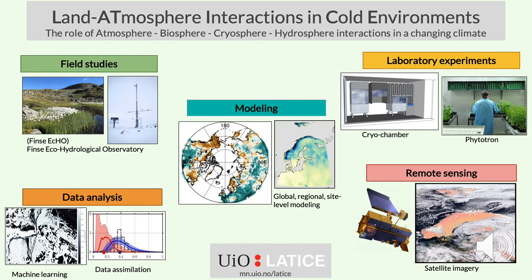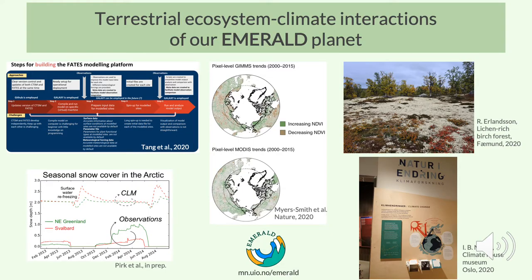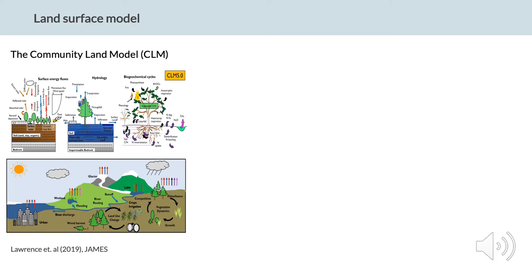There are two projects supporting this study. The first one is Lattice, which brings many different approaches to analyze and investigate land-atmosphere interactions in cold environments. With a similar approach, the Emerald project is focusing on more arctic vegetation representation in Earth System models, and a common interest in this project is the land surface model called Community Land Model CLM.